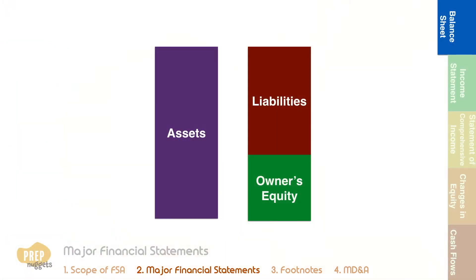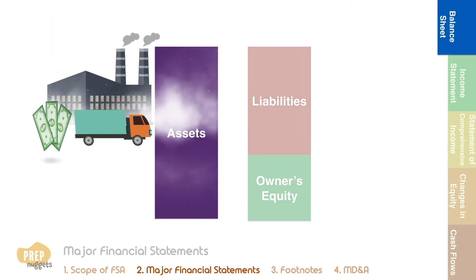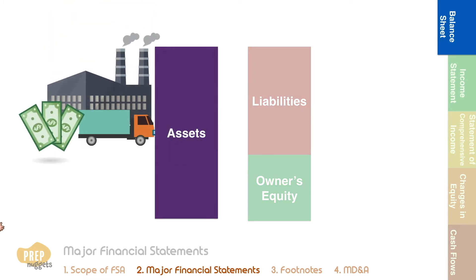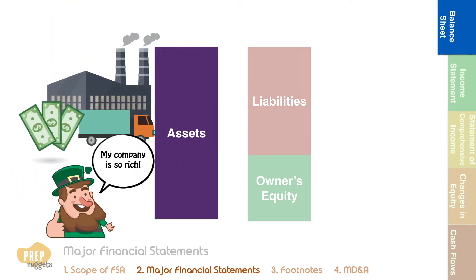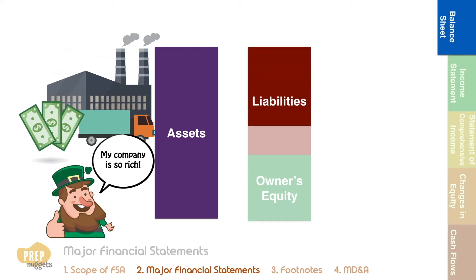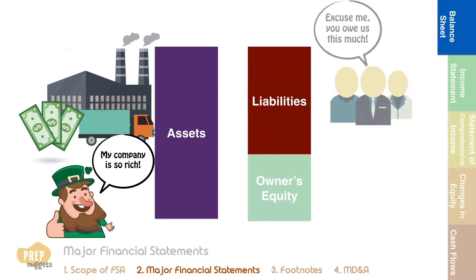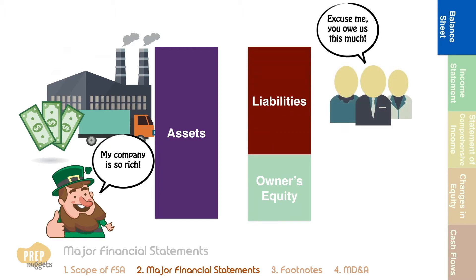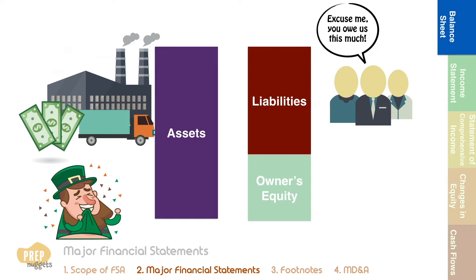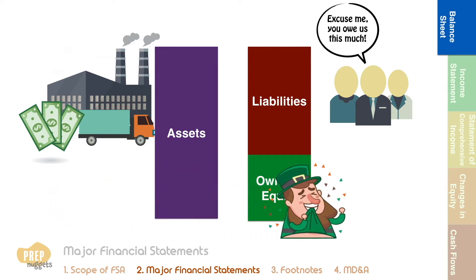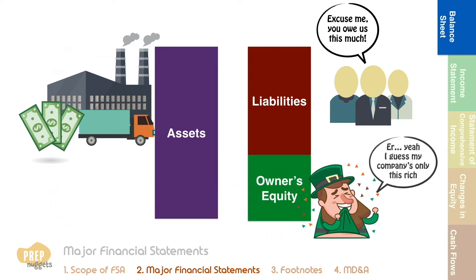The balance sheet consists of three elements: assets, which are resources controlled by the firm (this includes cash that the firm is holding); liabilities, which are amounts owed to creditors and lenders; and owner's equity, which is the owner's residual claim on the company's assets after deducting its liabilities.